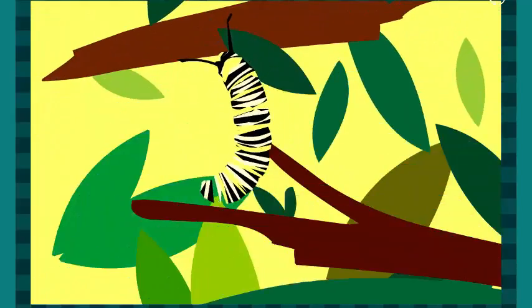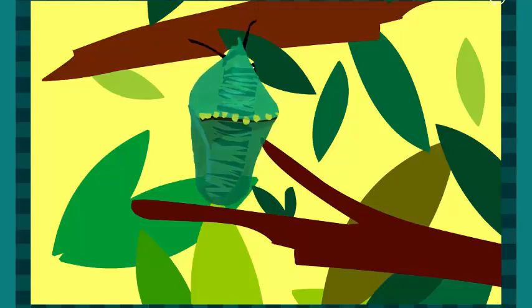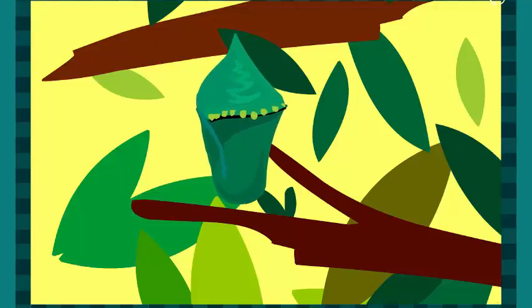Butterflies also go through a metamorphosis as they grow into adults. They hatch from their eggs as caterpillars, and when they have eaten enough, form cocoons around themselves. Inside the cocoons, they transform and come out as adult butterflies.